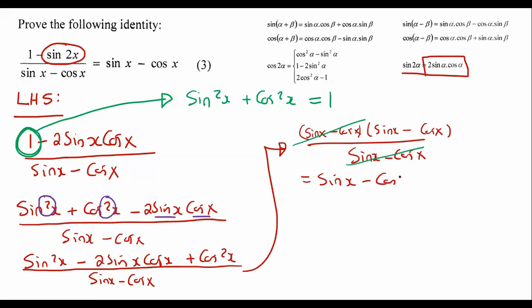And so we are left with an answer of sin x minus cos x. Therefore, the left hand side is the same as the right hand side.